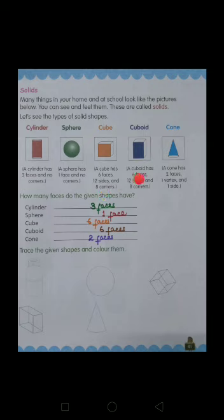A cuboid has also 6 faces, 12 sides and 8 corners. And a cone has 2 faces, 1 vertex and 1 side.